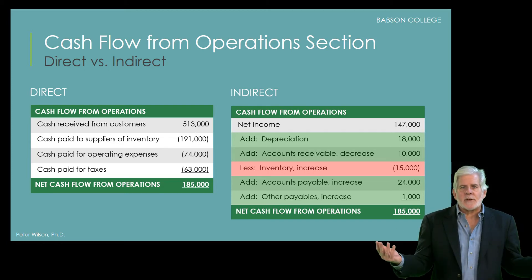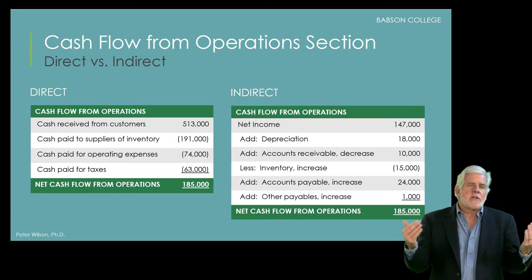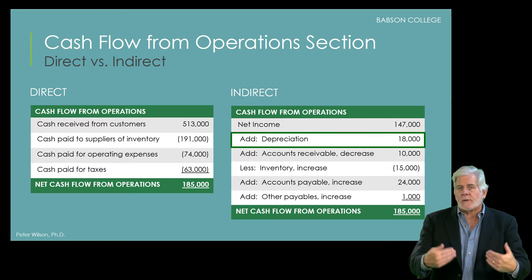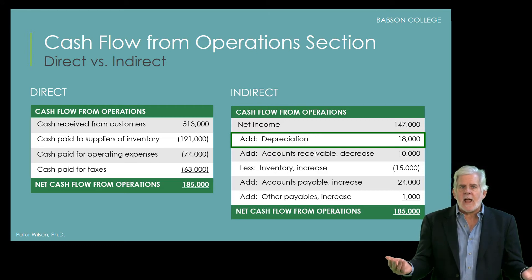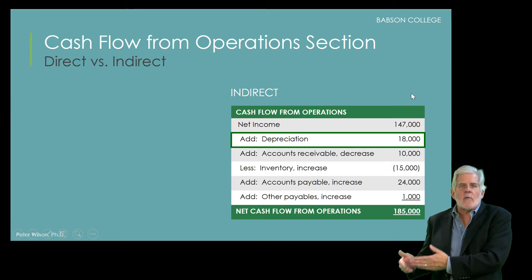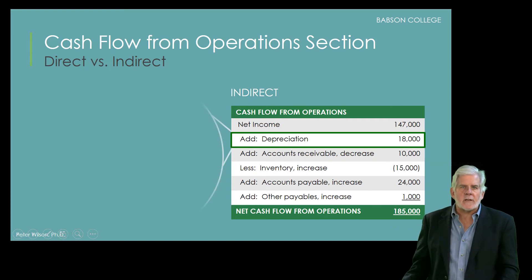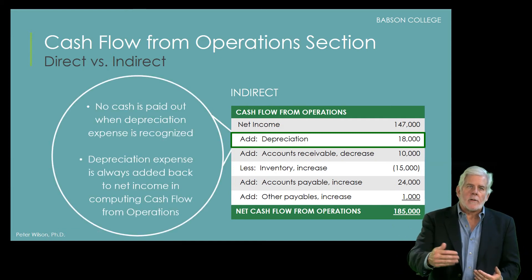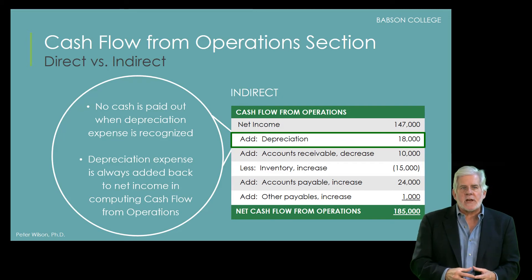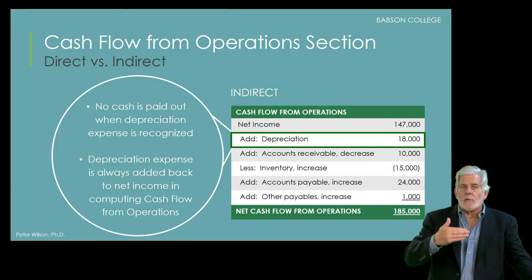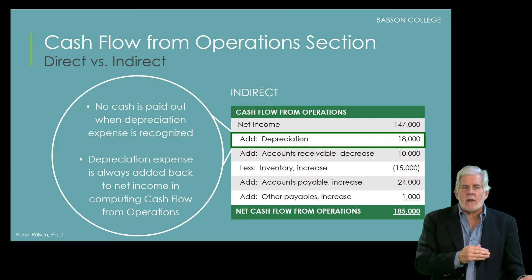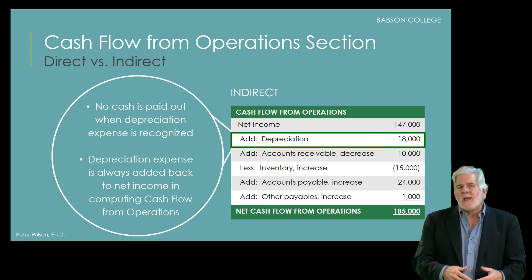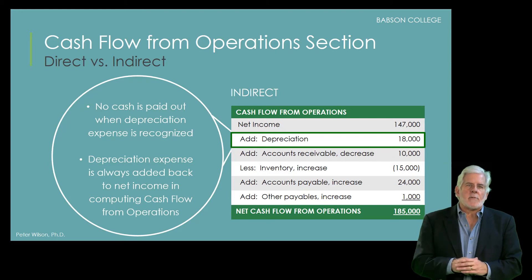For example, take depreciation expense. Depreciation is a normal expense on the income statement that reduces net income. However, it doesn't use any cash — no cash is paid out when depreciation expense is recognized. So cash flow from operations will always be more than net income by the amount of depreciation expense. In order to adjust or reconcile net income to cash flow, we must add back depreciation expense. That's the sort of thing that is happening with each line item.